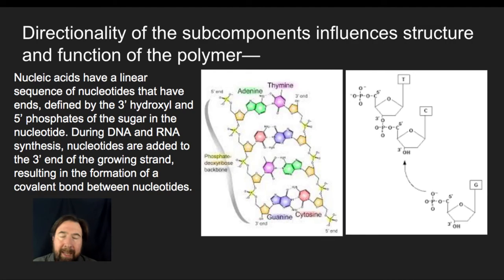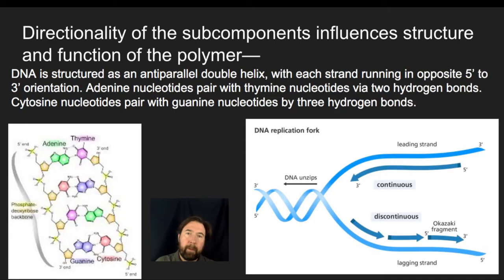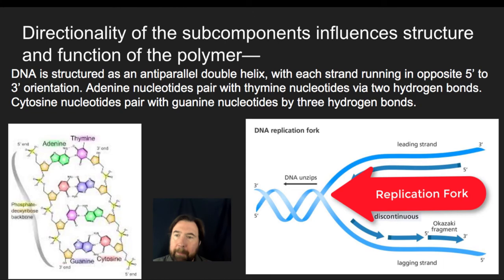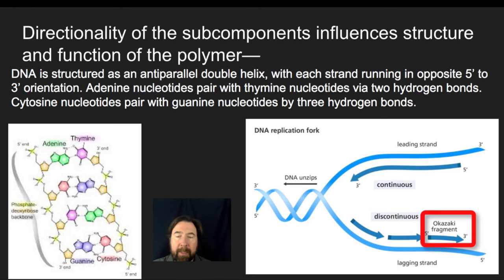Two DNA strands run anti-parallel, which is another example of directionality dramatically influencing structure. Because DNA and RNA can only be built in the 5' to 3' direction — adding new nucleotides onto the 3' end — when we open up DNA and create a replication fork, we can continuously add new nucleotides as we move towards the fork on the leading strand. But on the lagging strand, we build little tiny Okazaki fragments as the DNA unzips and opens up the fork, slowly adding fragments in that anti-parallel direction.